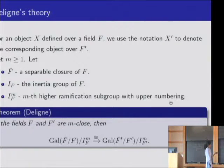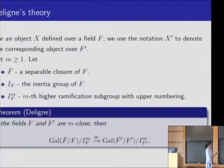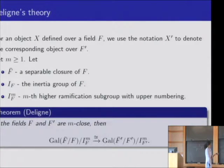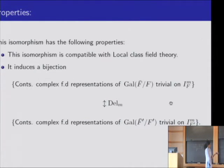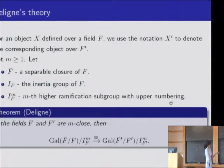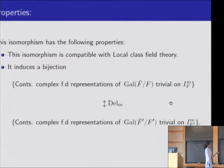Deligne's theorem: if the fields F and F prime are M-close, then the Galois group of F-bar over F modulo the M-th higher ramification subgroup is isomorphic to the corresponding quotient for F prime. An important consequence is that this isomorphism holds when we pass to the abelianizations, and it is compatible with local class field theory.